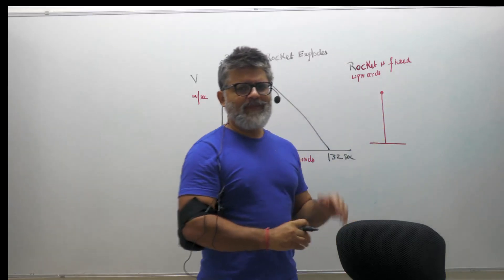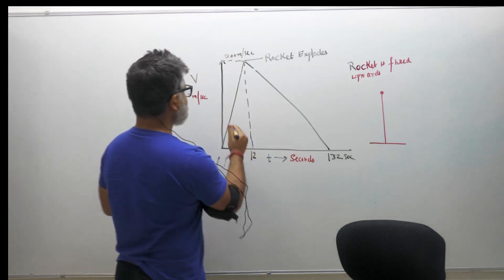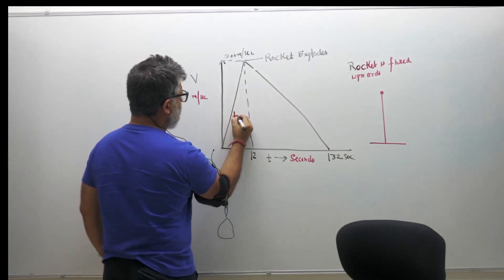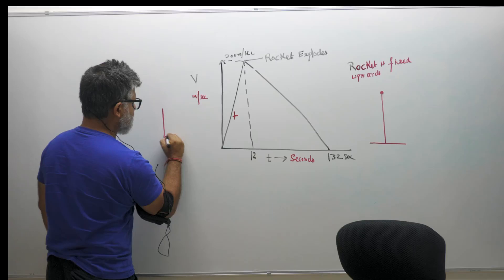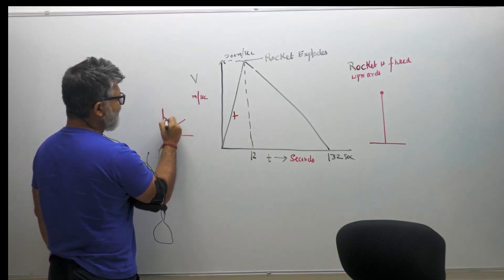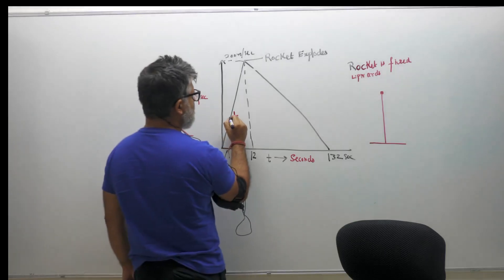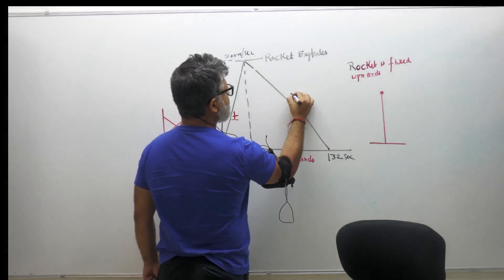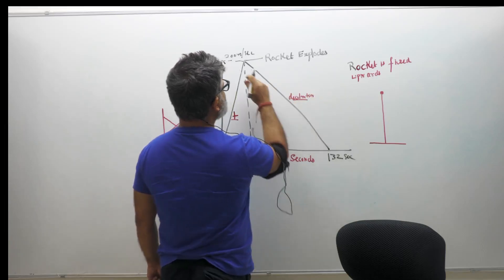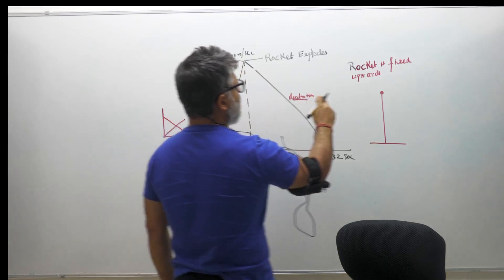If you notice, if you have a rocket which is being fired upwards, it explodes here. It still has momentum, right? So obviously this is acceleration because the slope is positive. This is a positive slope. If the slope is like this, it's a negative slope. So this is acceleration, this is deceleration.